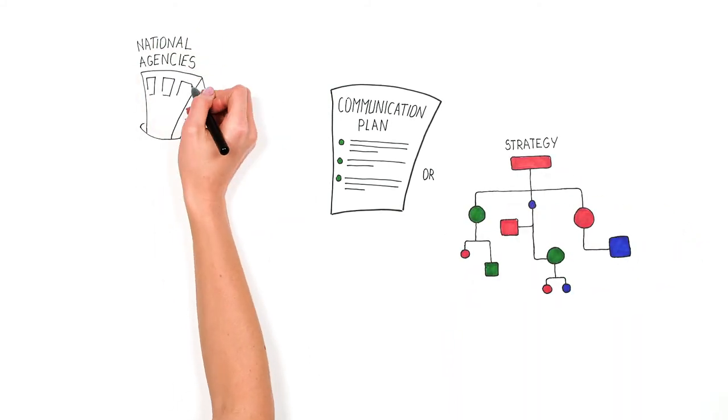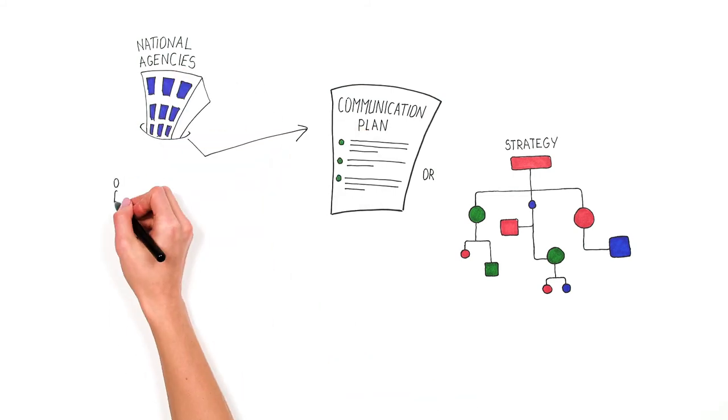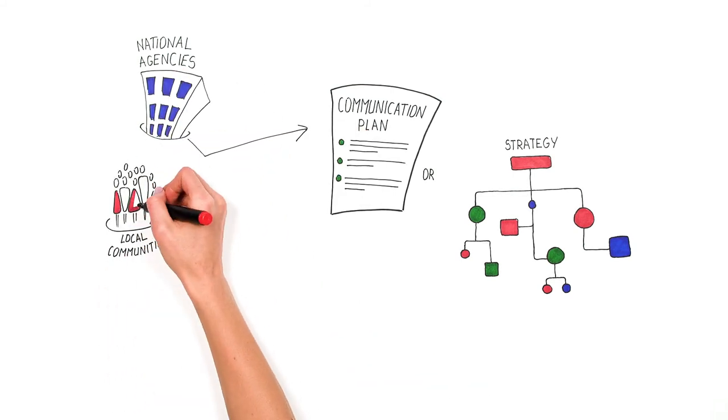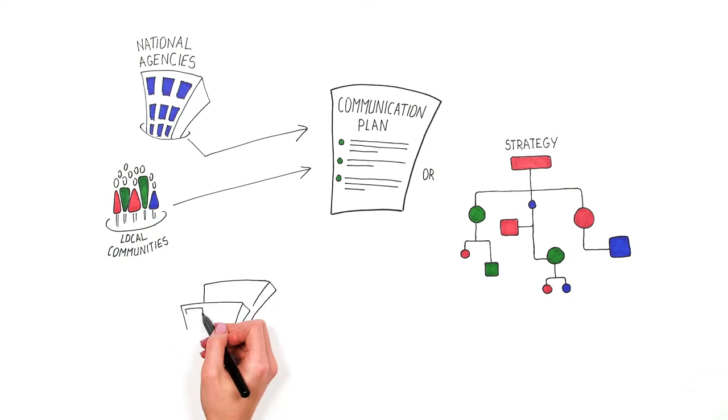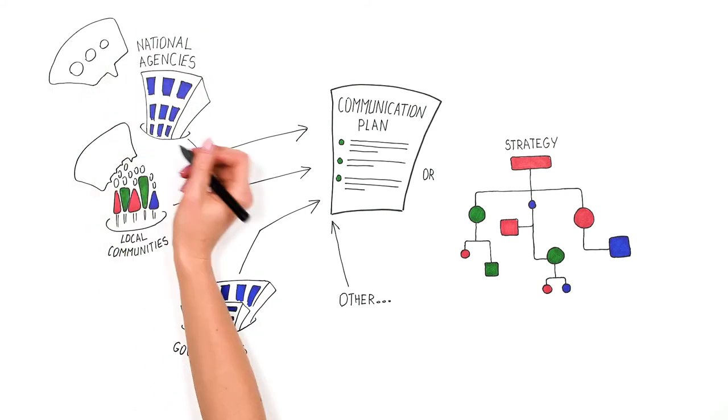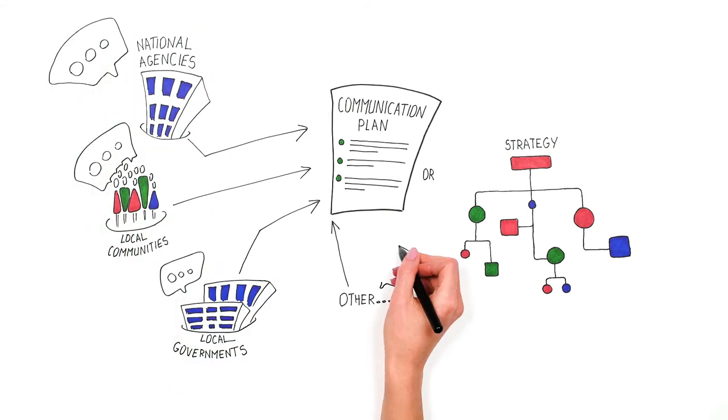The communication plan should also involve other stakeholders such as national agencies, local communities, local governments and other stakeholders in the field or other educational fields. It is important to be clear about who is communicating what and to whom throughout all phases of the project.